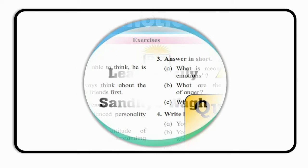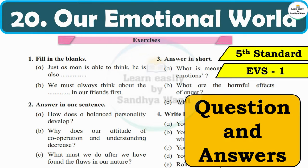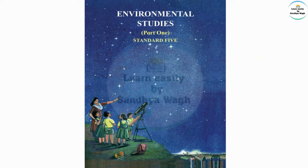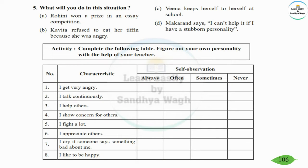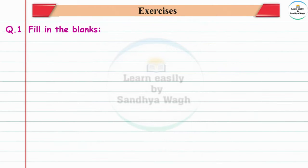Hello dear students. Today we are going to learn and understand the question and answers of Lesson Number 20, 'Our Emotional World,' from Environmental Studies textbook Part 1, Standard 5, textbook page number 105 and 106. We will discuss the exercise model questions and answers.